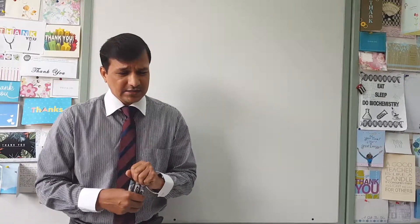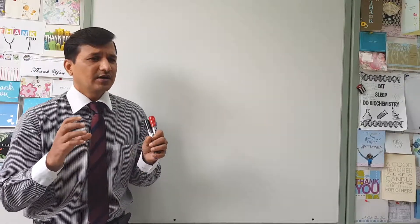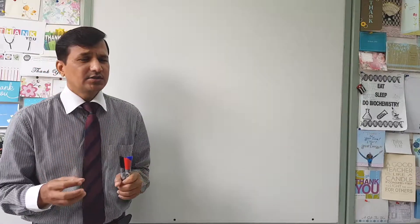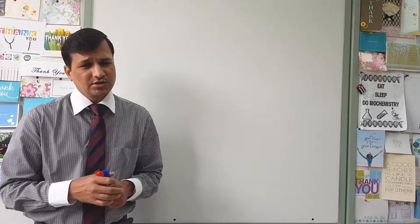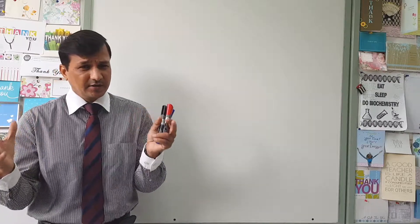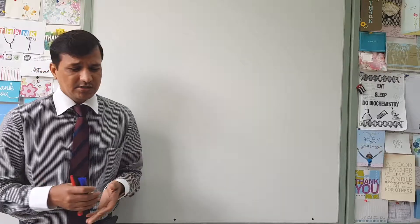Our next disease is Niemann-Pick disease, which is because of a defect in sphingomyelinase enzyme. Because this enzyme is defective, there is accumulation of sphingomyelin, especially in neuronal tissue, giving rise to neurological issues including blindness, deafness, mental retardation, dementia, seizures, convulsions, dysarthria (difficulty in speech), dystonia (difficulty in body postures), and dysphagia (difficulty in swallowing). These patients may also have muscle disorders.